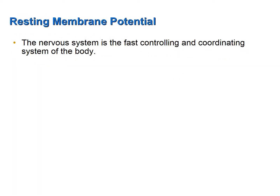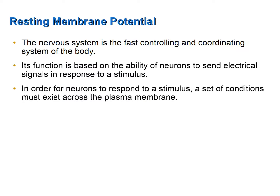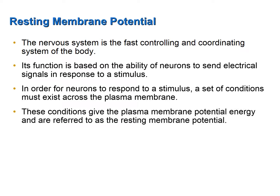As you know, the nervous system is the fast, controlling, and coordinating system of the body. Its functions are based on the ability of its neurons to send electrical signals in response to a stimulus. In order for a neuron to respond to a stimulus, a set of conditions across the plasma membrane must exist. These conditions give the plasma membrane potential energy and are referred to as the Resting Membrane Potential.